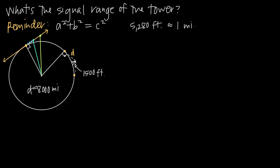We've also been told that there is a 90-degree angle here, so we have a right triangle. The tangent line goes through the point of tangency to the top of the cell tower, and the hypotenuse runs from the center of the circle to the top of the cell tower. Since the diameter of the earth is about 8,000 miles, the radius is half that — about 4,000 miles. So this leg of the triangle is 4,000 miles.